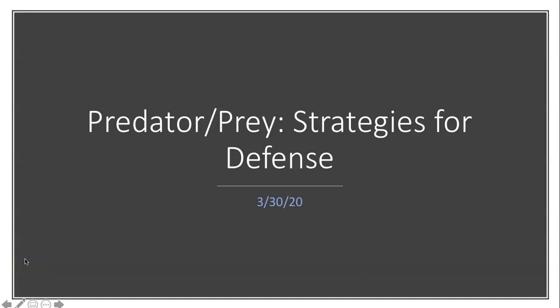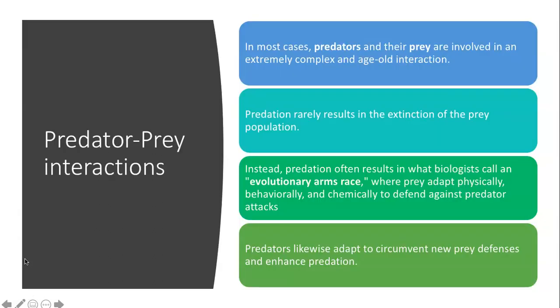Hello everyone, today we're going to talk about predator-prey interactions again, and this time I want to talk about strategies that organisms have for defense against predation. In most cases, predators and their prey are involved in these extremely complex and age-old interactions. Predation rarely results in the extinction of the prey population. Instead, what we see is this evolutionary arms race where prey adapt physically, behaviorally, and chemically to defend against predator attacks.